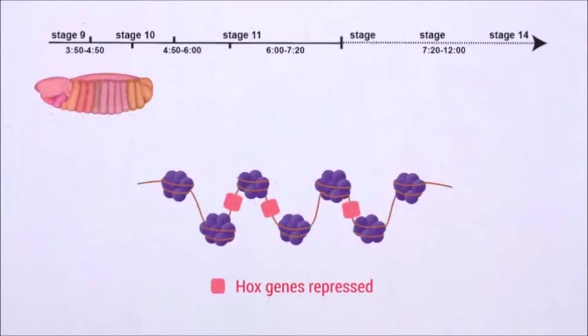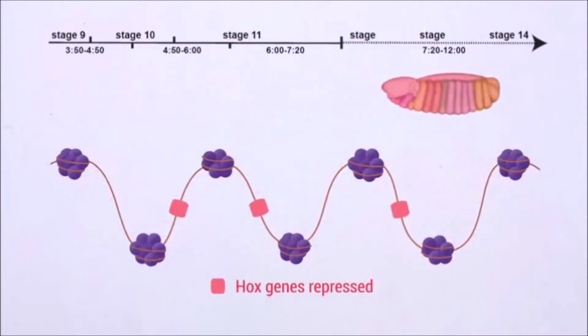During later embryogenesis, we observe further chromatin opening at Hox complexes in both polyhomeotic and polycomb mutants, which is coupled to strong deregulation of Hox genes at this stage of development.